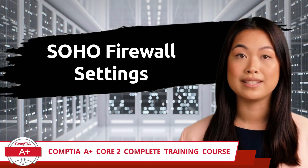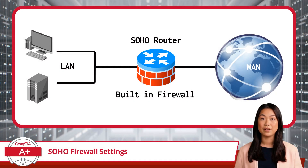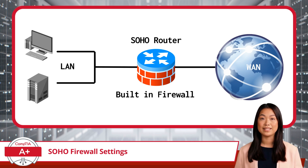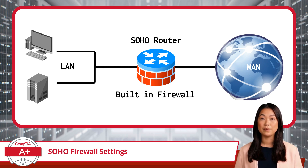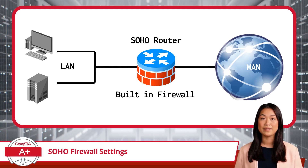SOHO Firewall Settings. When setting up a small office or home office network, configuring your SOHO firewall is yet another way to ensure security. The firewall acts as the network's gatekeeper, controlling which data is allowed in and out of the local area network.